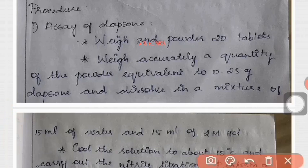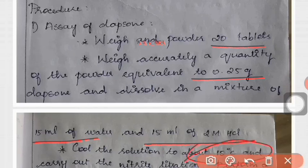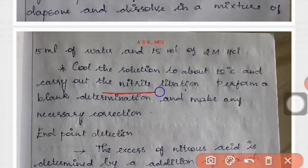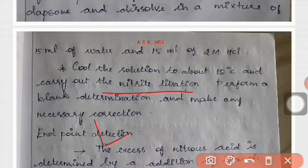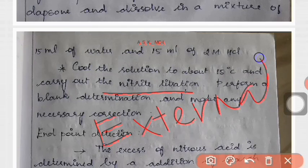Assay of dapsone is like this: powder 20 tablets, weigh 0.25 gram, add in water and HCl. Then cool the solution to 10 degree centigrade and titrate against sodium nitrite solution. The end point determination is by external indicator method.